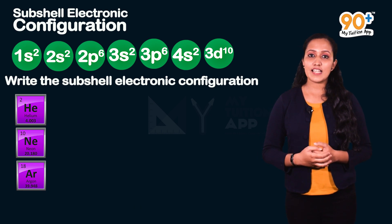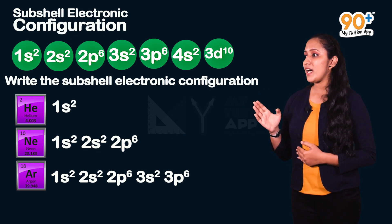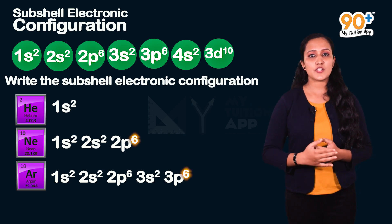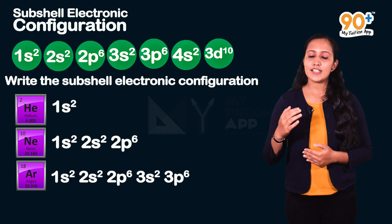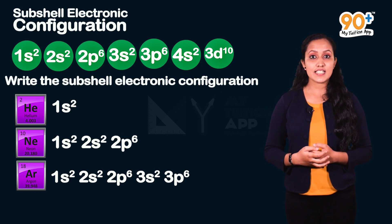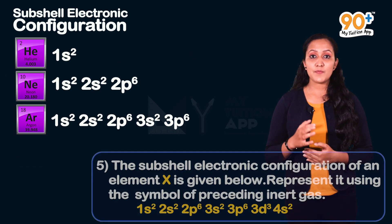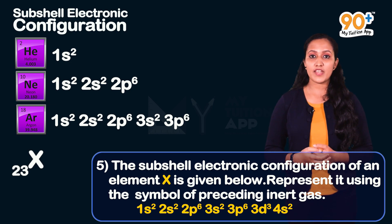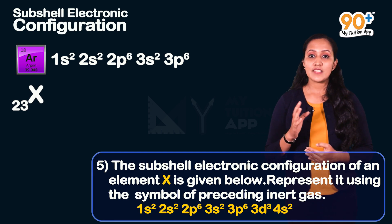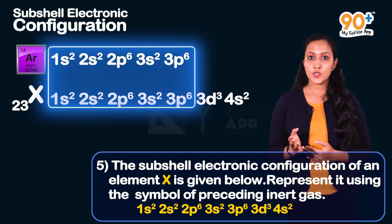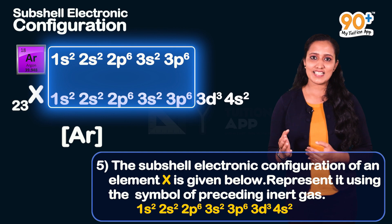Element X has 23 electrons, so its atomic number is 23. The nearest preceding inert gas is argon (18). The configuration 1s², 2s², 2p⁶, 3s², 3p⁶ corresponds to argon. So the answer is represented as [Ar] 3d³, 4s².